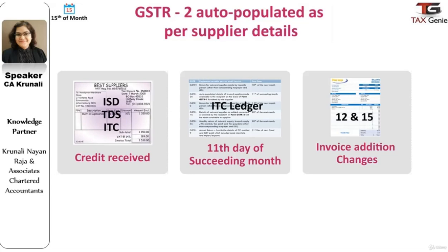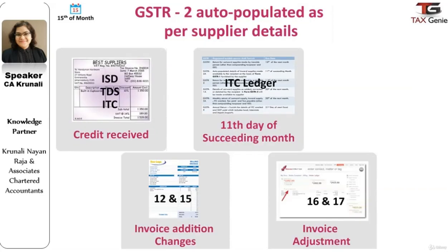After the 11th day of the succeeding month, the service receiver can view the input tax credit ledger on the GST Network. Addition or deletion of the invoice by the taxpayer will be permitted between the 12th and 15th of the succeeding month, and any adjustments would be permitted on the 16th and 17th of the succeeding months.